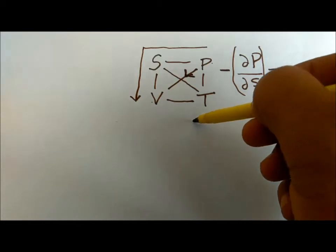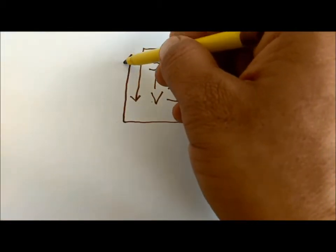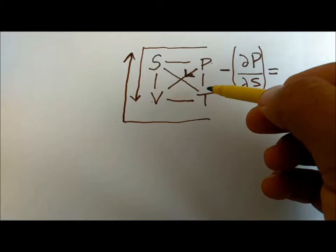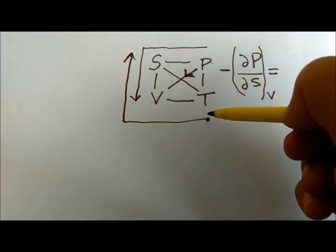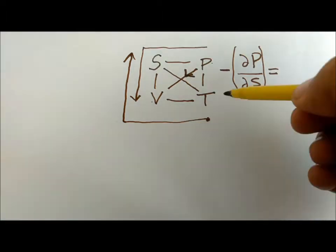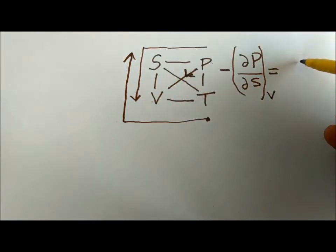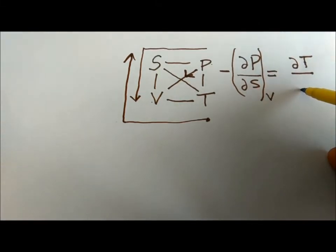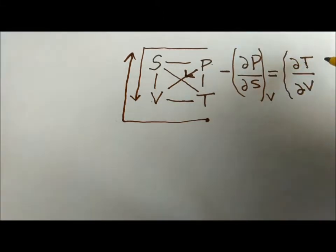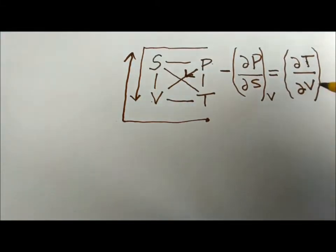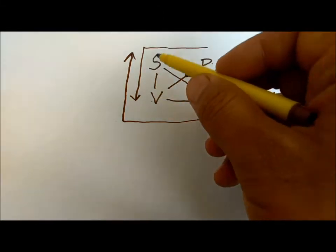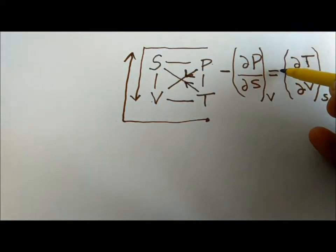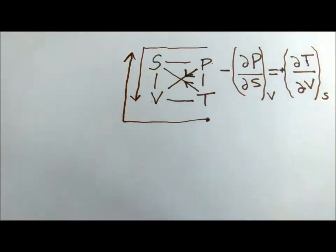We go clockwise up to S. The one which is left, we start from that and go backward. When we go from P to S, this is del T over del V at constant S. When we go from P to S the arrow goes up, so it is with a plus sign. This is Maxwell's first relation.